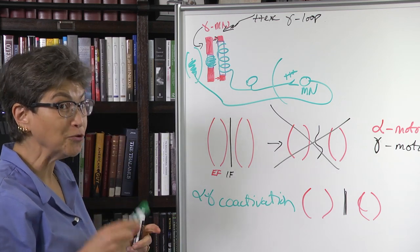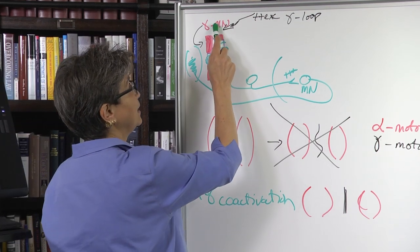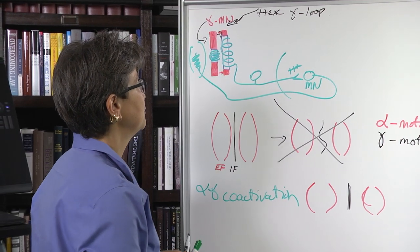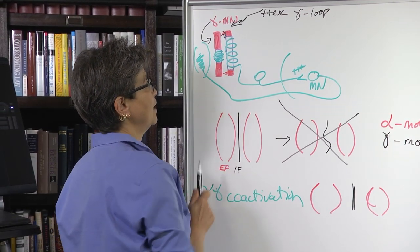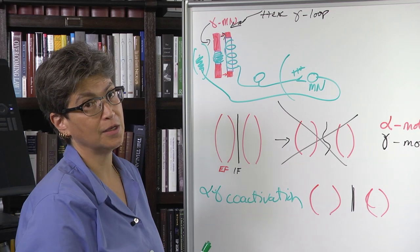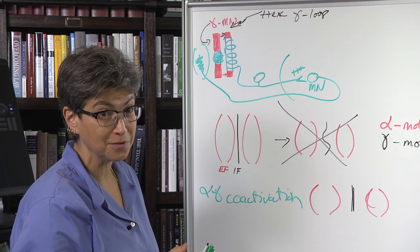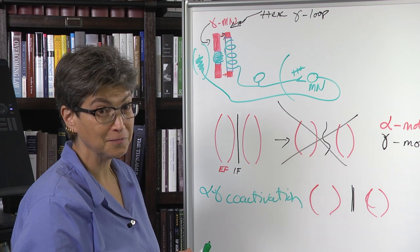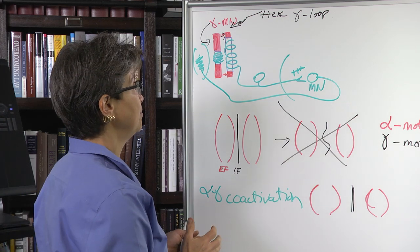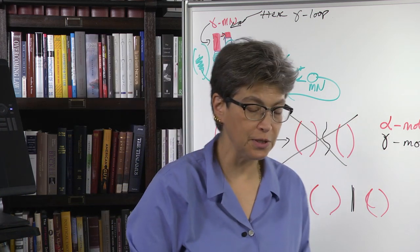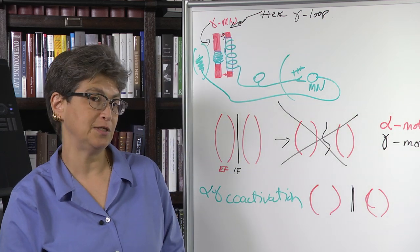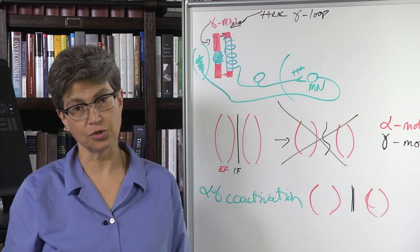So now what have you done? By stimulating the gamma motor neuron, you have ended up with a contraction, a visible contraction of that muscle. All right. So that's the gamma loop. Now I wouldn't be talking about that if it didn't occur. It does occur.